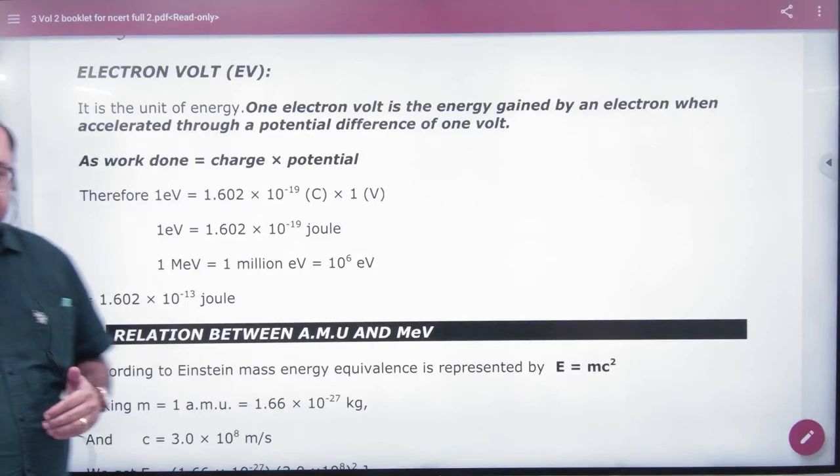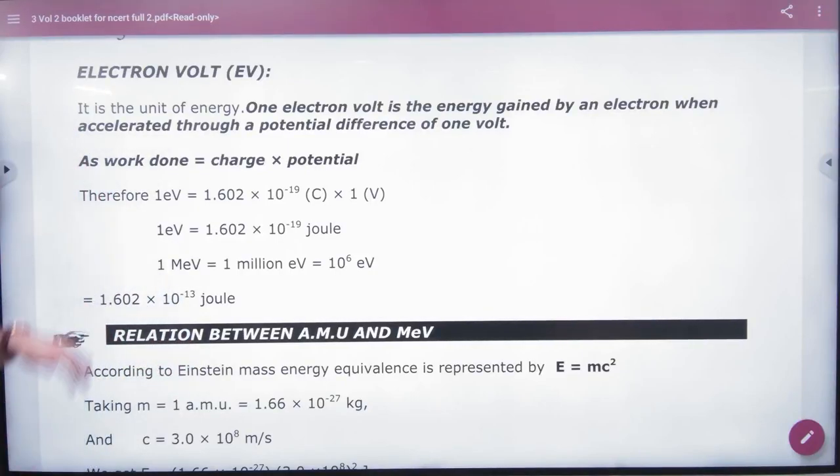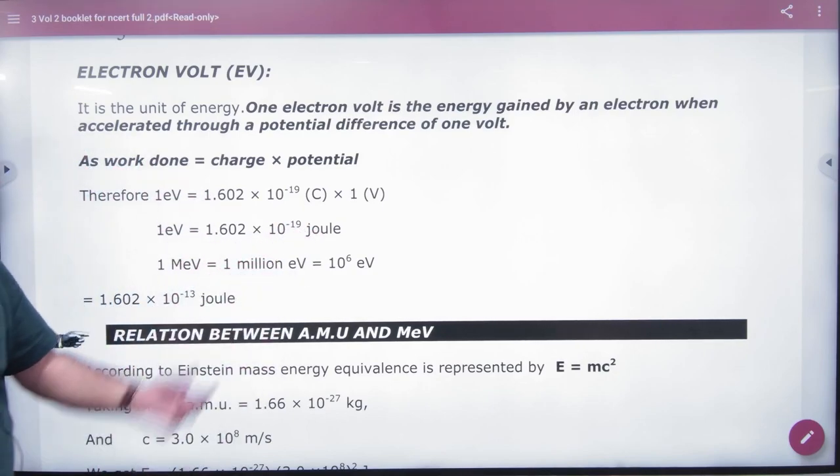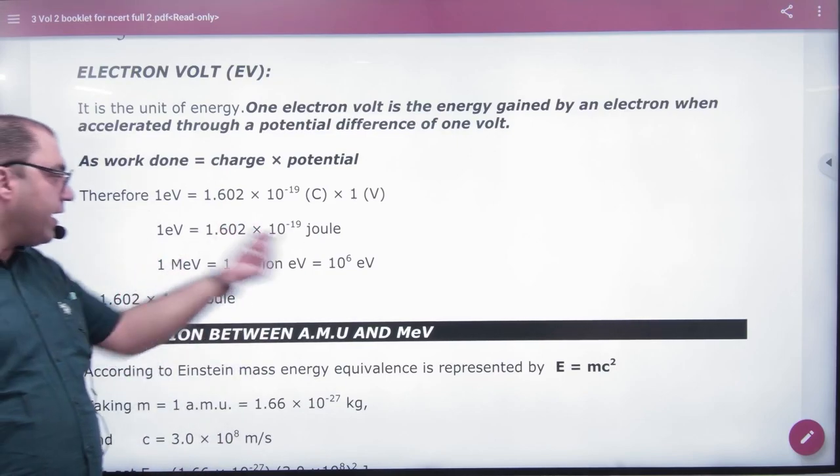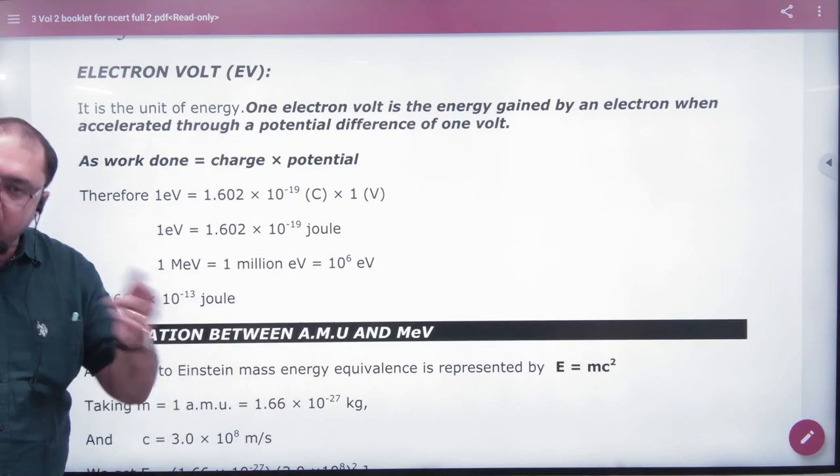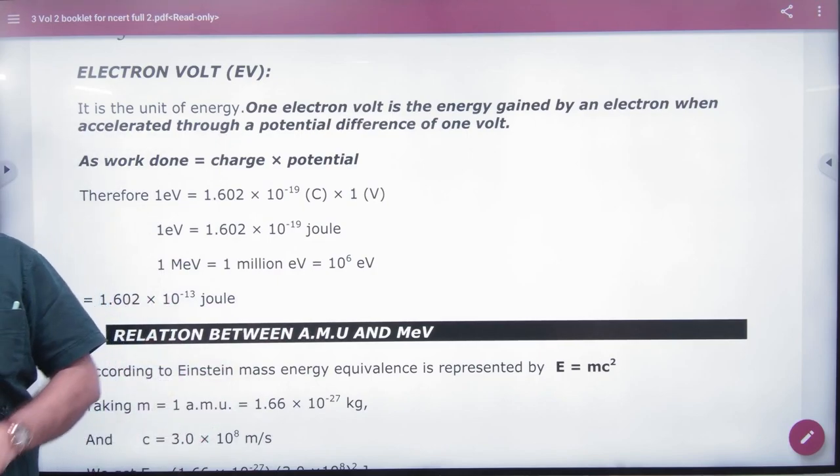So electron volt and amu we have studied in electrostatics. Electron volt is an energy unit. If we convert one electron volt to joule, it's 1.6 into 10 to power minus 19. And if we want to do mega electron volt, 1.6 into 10 to power minus 13, multiply, because in mega there's a 10 to power 6 factor.